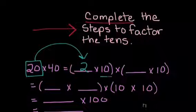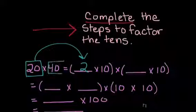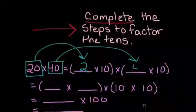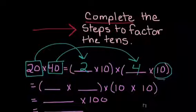For my second blank, I have 40. I know 4 times 10 is 40. Again, I have factored the 10s.